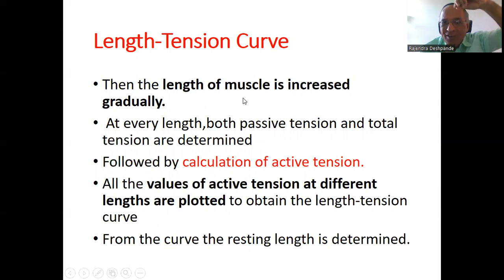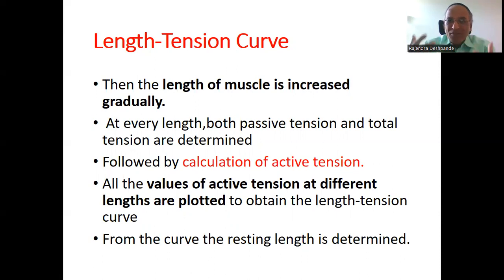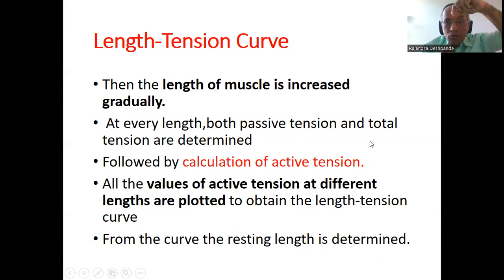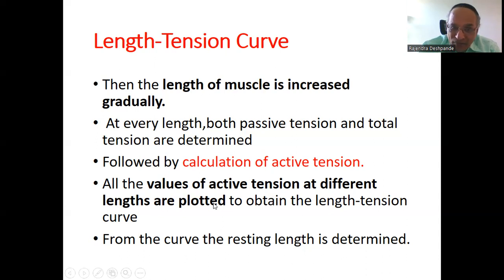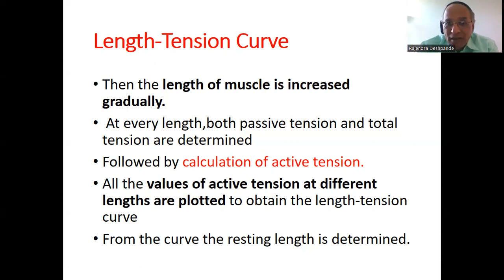The length of the muscle is then gradually increased, and at every length, both passive tension and total tension are determined. For example, at 4 inches, the passive tension is recorded without stimulation, then stimulation is applied and the contraction is recorded on the graph. So at every length, passive and total tension are determined, and the active tension is calculated. All the values of active tension at different lengths are plotted on a graph with x and y axes to obtain the length-tension curve.